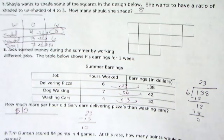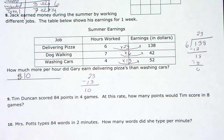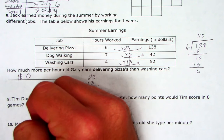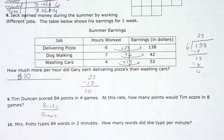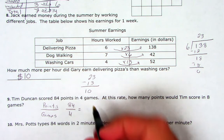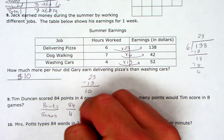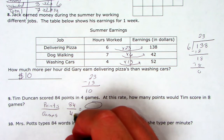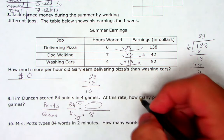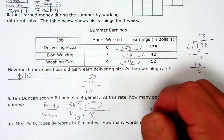Number nine: Tim Duncan scored 84 points in 4 games. At this rate, how many points in 8 games? We're talking about points in games. We have 84 points in 4 games, we want to know how many points in 8 games. Scale factor to get from 4 to 8 is multiply by 2, so 84 times 2 equals 168 points.